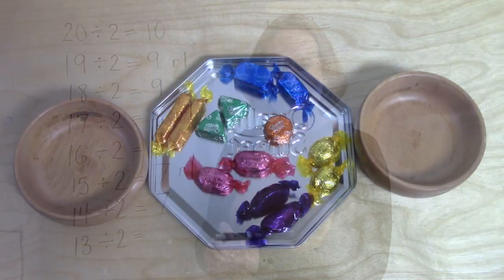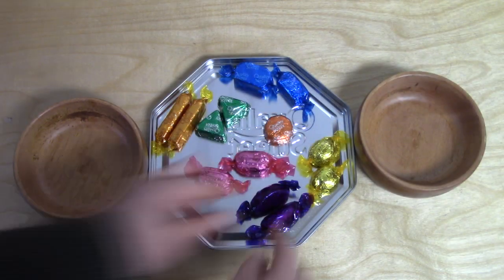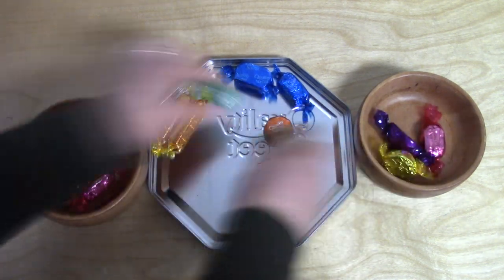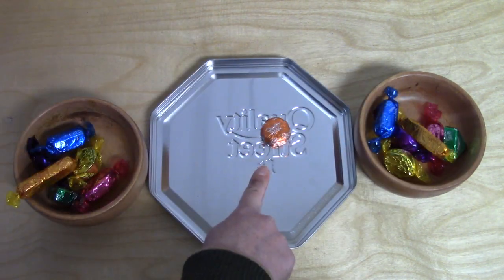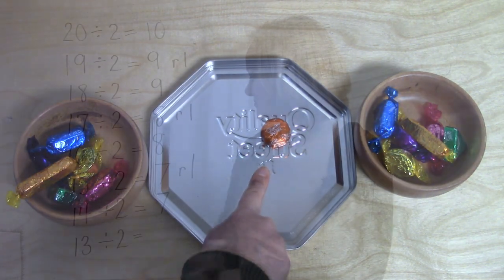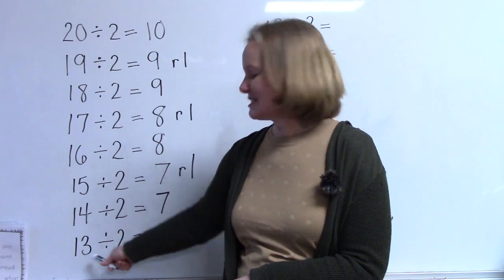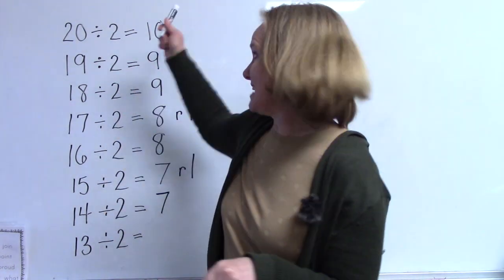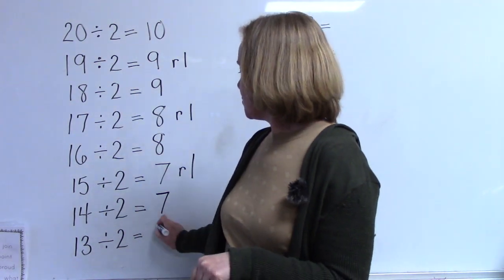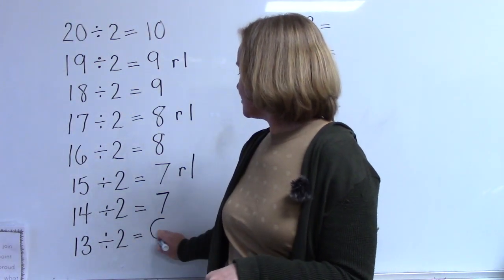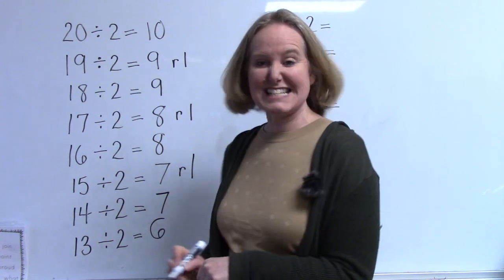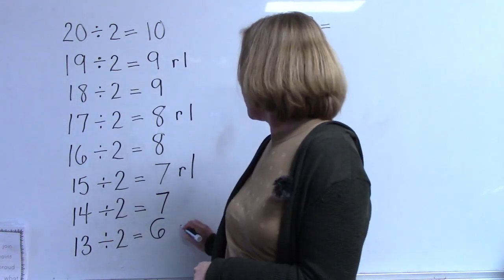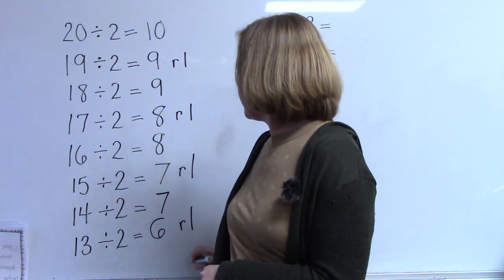Now we're going to divide thirteen by two. One, two, three, four, five, six, with one remaining. Thirteen divided by two is our last one of this column. We were able to have six candies in each bowl with a remainder of one.